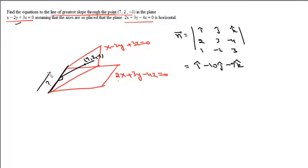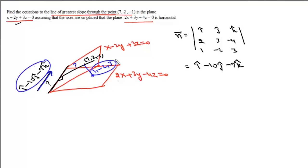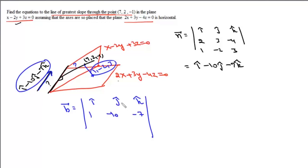A vector in the direction of this line of intersection is given by i - 10j - 7k. Now we need to find the direction ratios of the line of greatest slope. This line is perpendicular to the line of intersection and also perpendicular to the normal of the inclined plane, whose direction ratios are 1, -2, 3. Any vector perpendicular to two given vectors is given by their cross product. So the direction ratios of the line of greatest slope are given by the cross product with i, j, k; first row 1, -10, -7; and second row 1, -2, 3.